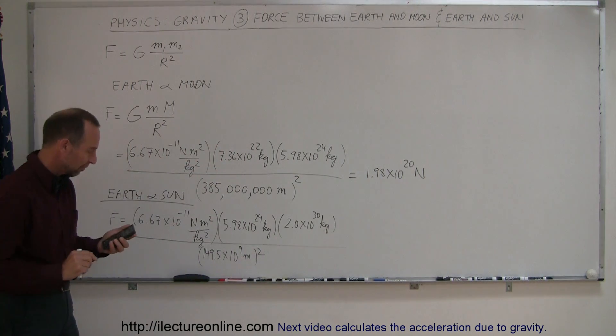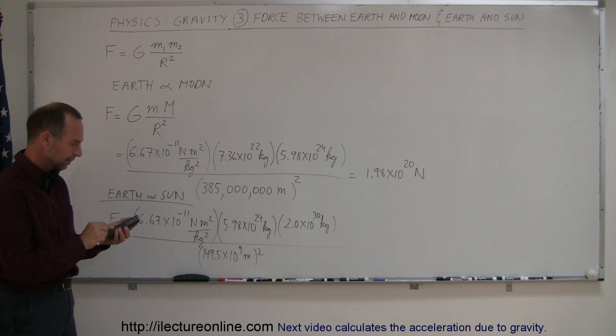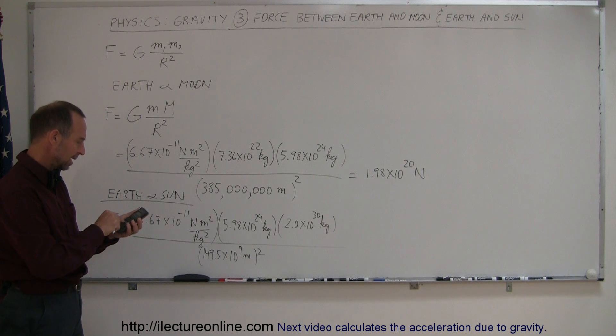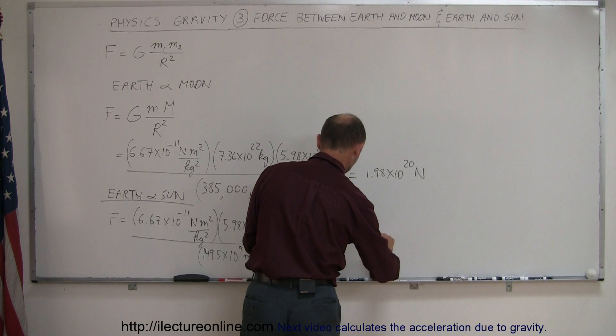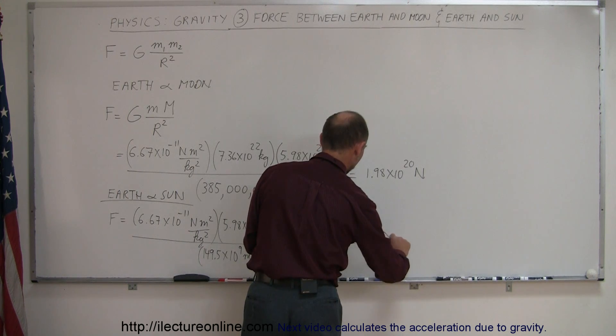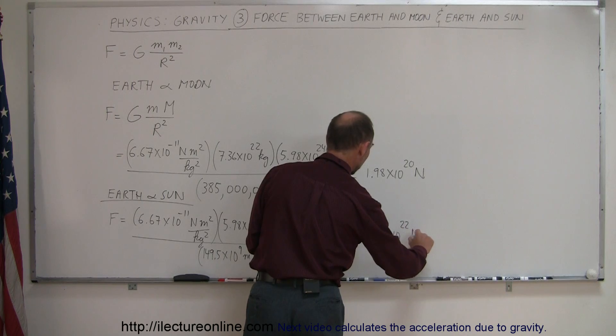That should give us the force between the Earth and the Sun. 6.67 e to the minus 11 times 5.98 e to the 24th times 2 e to the 30th divided by 149.5 e to the 9th squared equals, and the force between the Earth and the Sun is 3.57 times 10 to the 22nd Newtons.